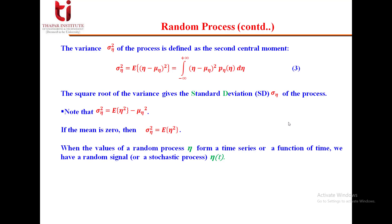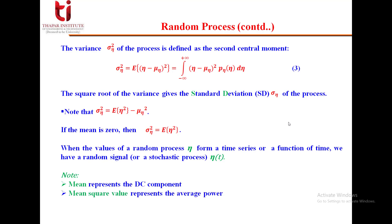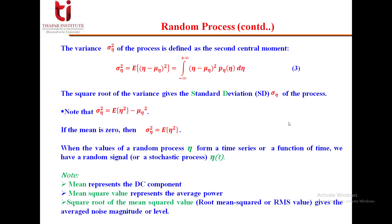When the values of a random process η form a time series — that is, it becomes a function of time — we have a random signal or stochastic process, represented as η(t). Key notes: the mean represents the DC component, the mean squared value represents average power, and the root mean square (RMS) value gives the average noise magnitude or level, which is used in signal-to-noise ratio calculations.